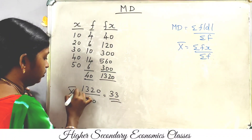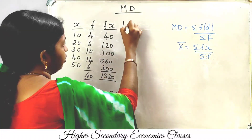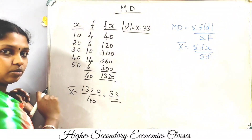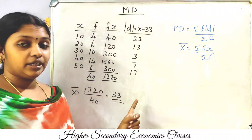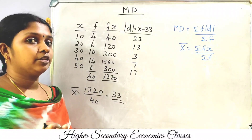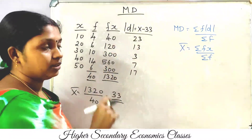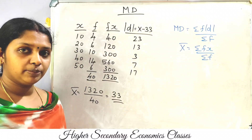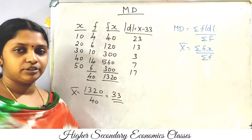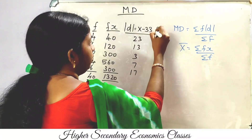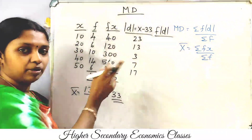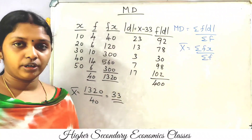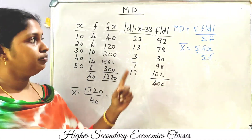Now we compute modulus d, where d equals x minus 33 for all values. We then compute f times modulus d for each row. Summing the f modulus d column, we get a total of 400.